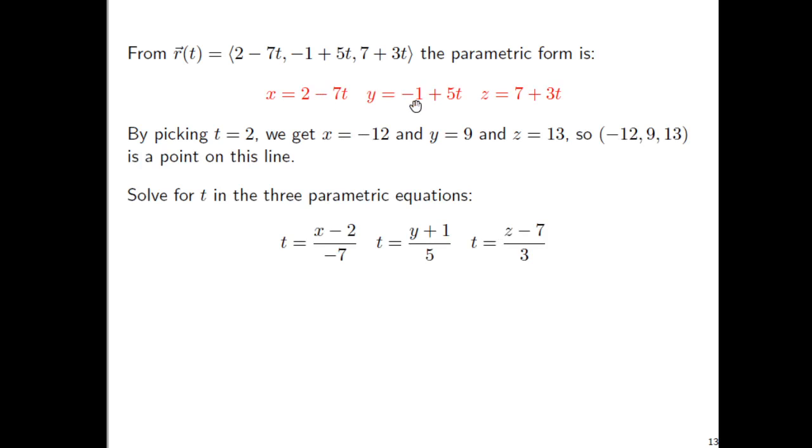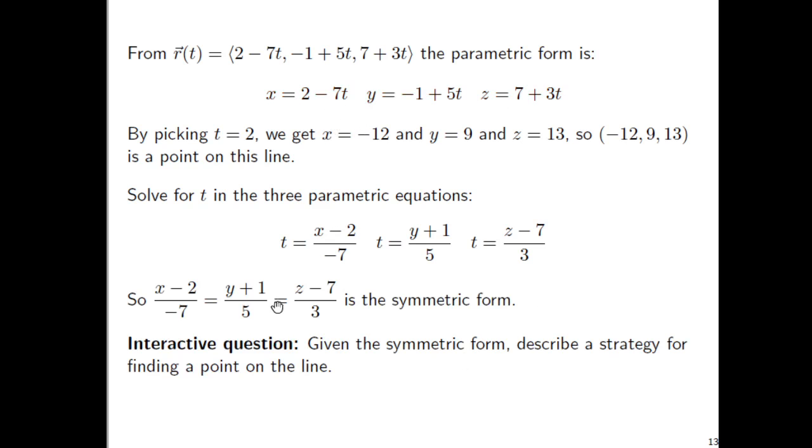And if we take the three equations, the three parametric form equations up here, and solve for T in each of these, we can set all three of these equal to each other, and this is called the symmetric form. So, interactive question. I'd like you to strategize more than anything. There's not one right answer to this. There's probably lots of ways to attack this. But if you were given this symmetric form, how would you come up with a point on the line? I mean, describe it in a very recipe-like format.